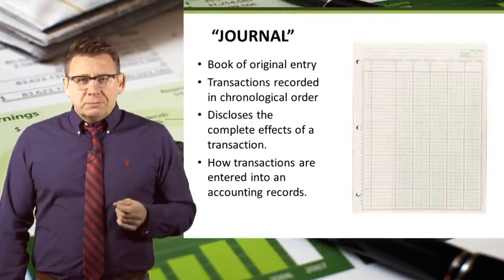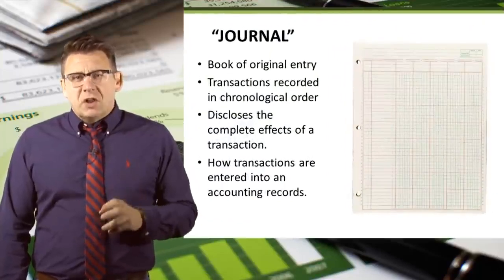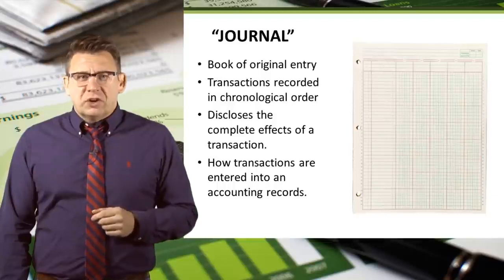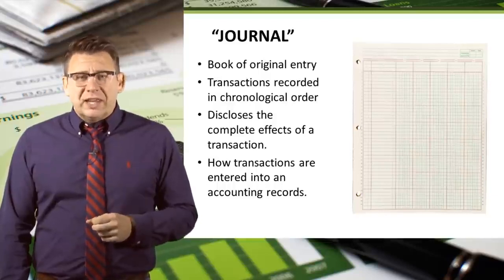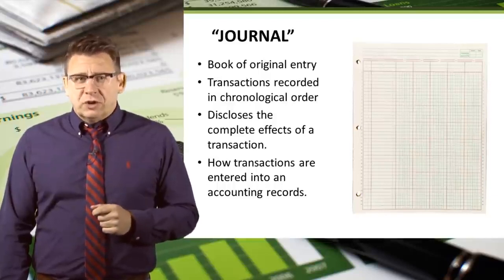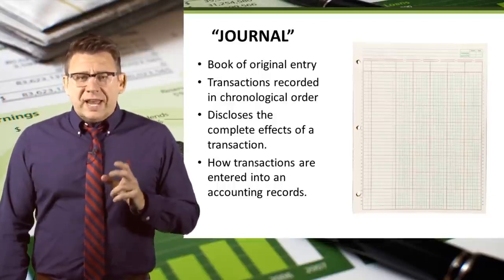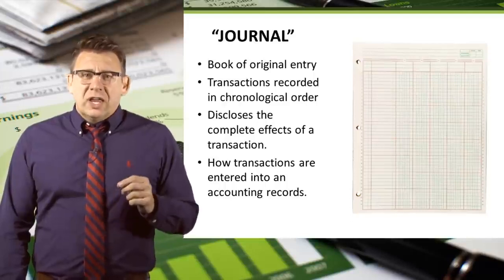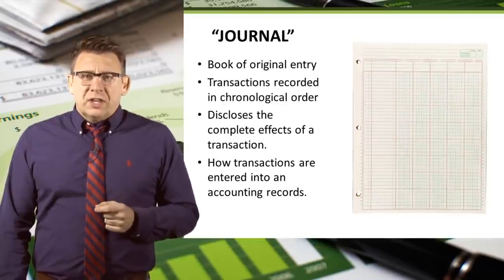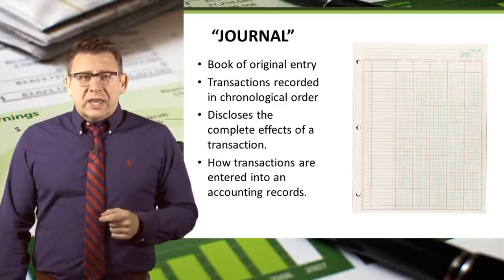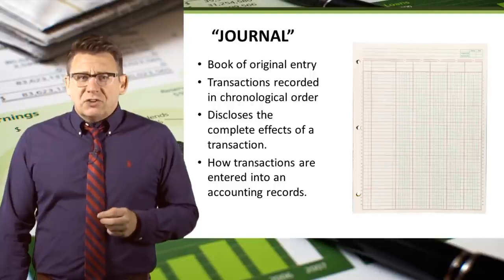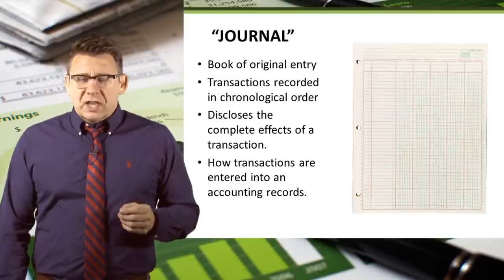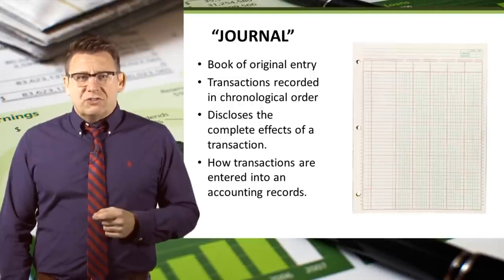The journal, sometimes called the book of original entry or more commonly the general journal, is how transactions are entered into accounting records. It is a chronological list of a company's transactions.